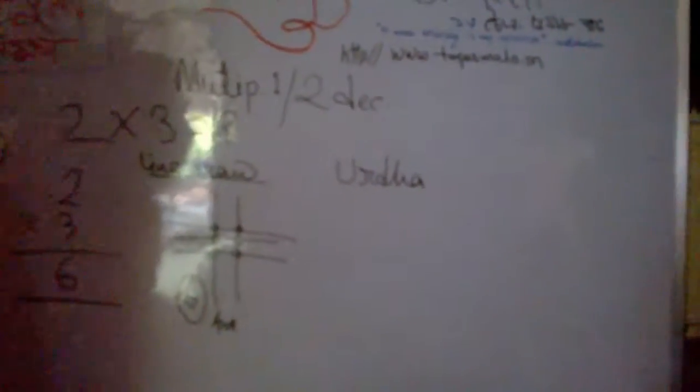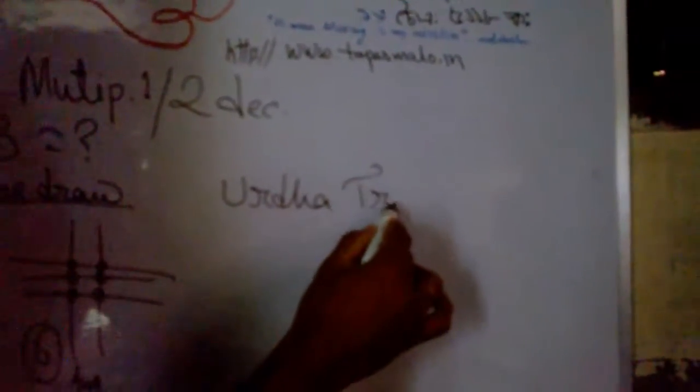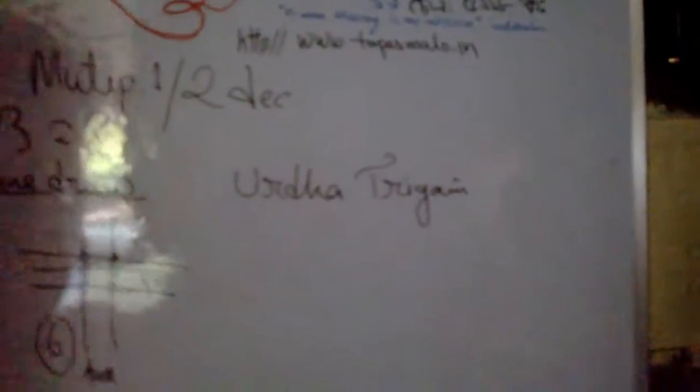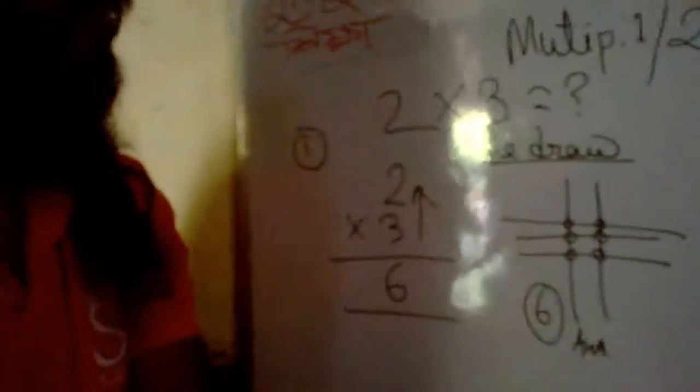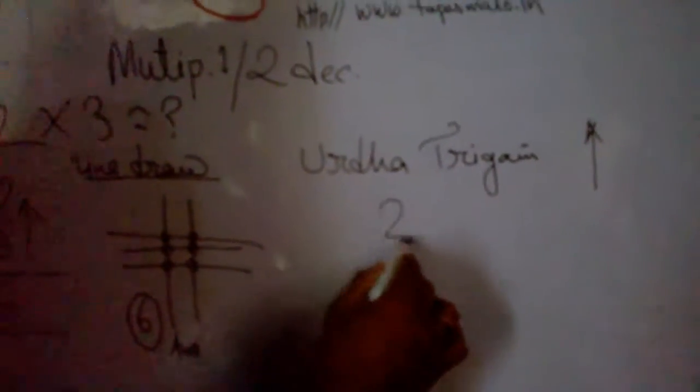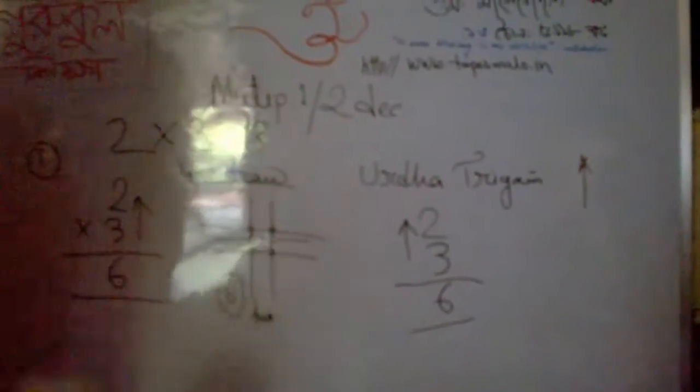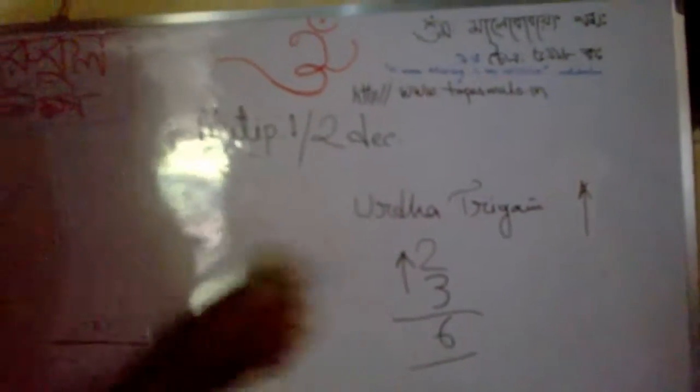Again another method is there: Urdhva Tiryagbhyam. This is from Sanskrit language from Veda. Urdhva Tiryagbhyam, you have to put arrows upside. This process is very easy for two decimal place. But when we do two decimal place that will be more fun, more easy to learn.